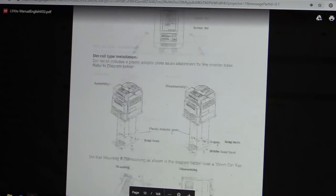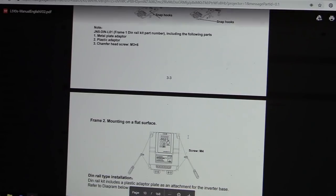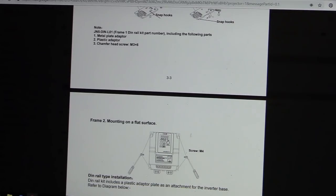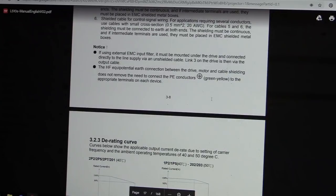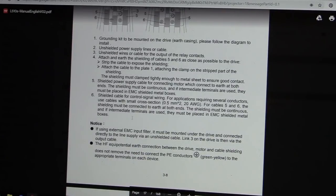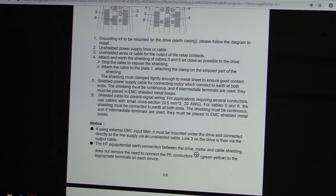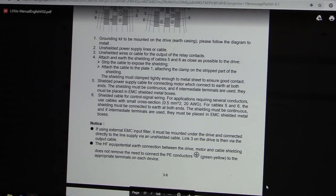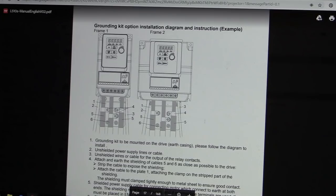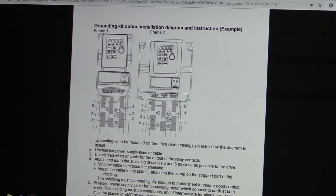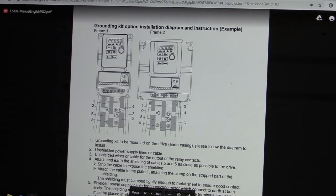This is the manual for the VFD I was considering buying but I didn't want to spend 150 quid on it just yet but maybe I will still. There is a lot of really interesting information and it is still worth a read. Here it says if using an external EMC input filter it must be mounted under the drive and connected directly to the line supply via an unshielded cable. You can see how they've shielded the cables, it's literally screwed directly onto the backing plate by the looks of it.